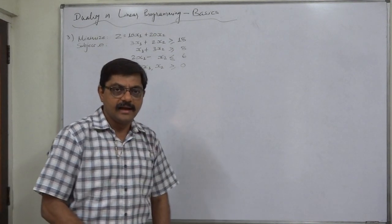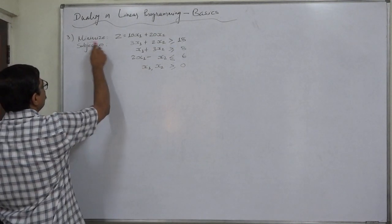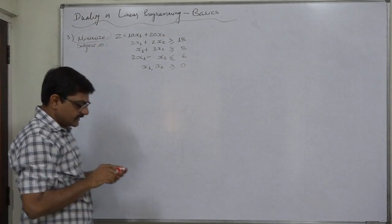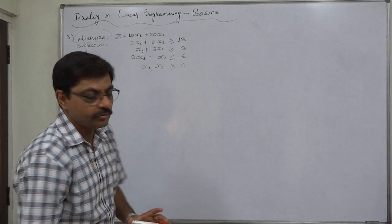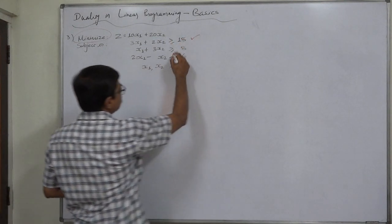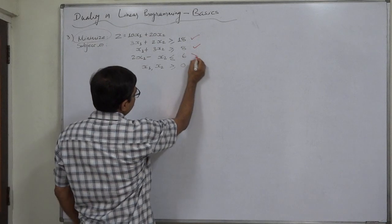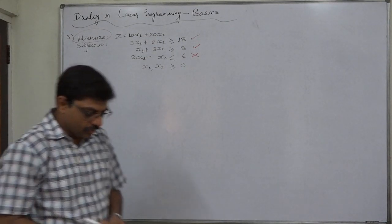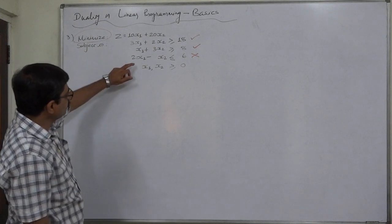Let us check whether the signs of all the constraints are matching with the objective. The objective is minimization, so the sign of all the constraints must be greater than or equal to. In case of the first constraint, yes it is. In case of the second, yes it is. But in case of the third, it is not.